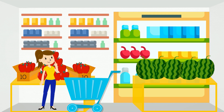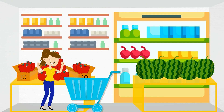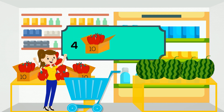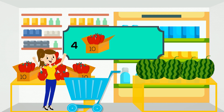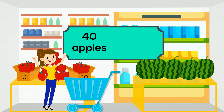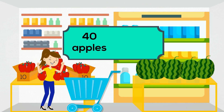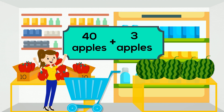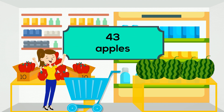But then we noticed that the grocery store also sells apples in bundles of 10. This will make our shopping a lot easier because if we get four bundles of 10 we will already have 40 apples. Then we just need to get three separate apples to have a total of 43 apples.